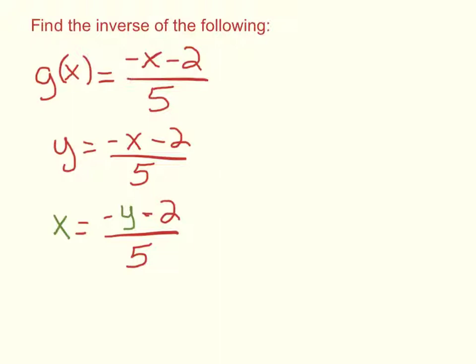Now my goal is to get y all by itself. So what I'm going to do here is I'm going to multiply both sides by 5, get rid of that 5 first. So that's going to give me 5x equals negative y minus 2.